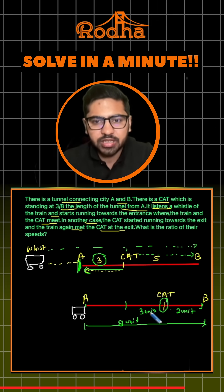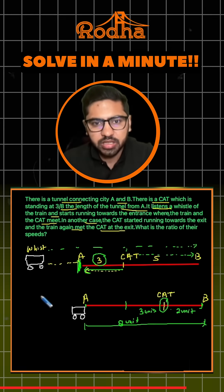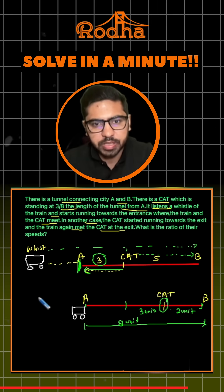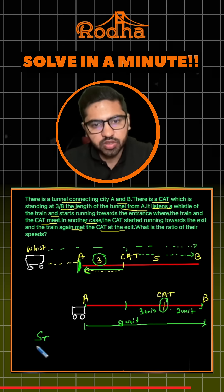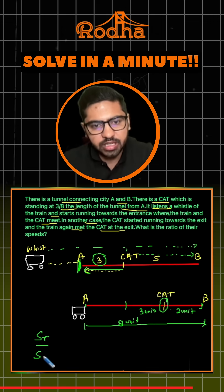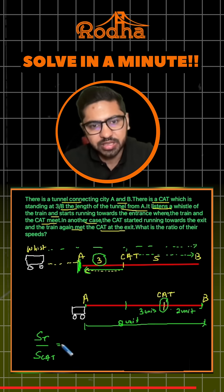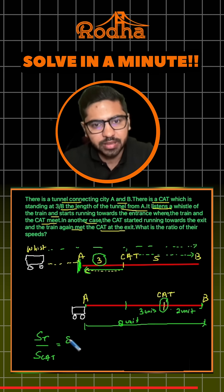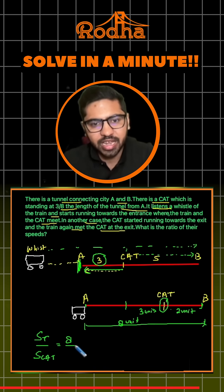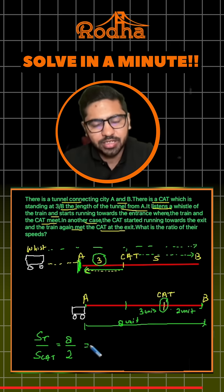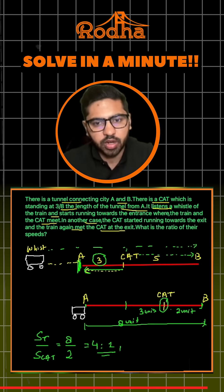Since time is constant, the ratio of the speed of the train to the speed of the cat equals the ratio of distances covered: 8 units by the train and 2 units by the cat. So the answer is 4 to 1.